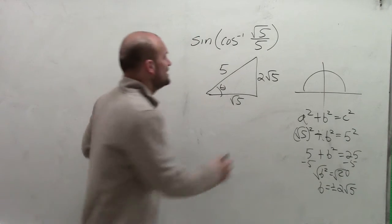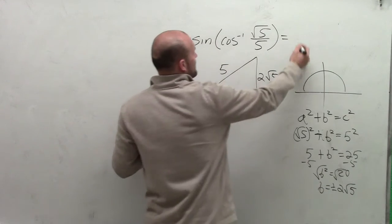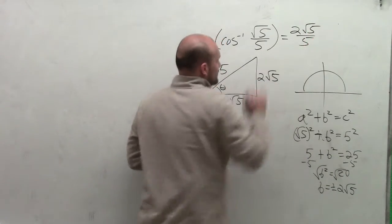Therefore, now evaluating for the sine, we can now get the opposite over hypotenuse, which would be 2 square root of 5 over 5.